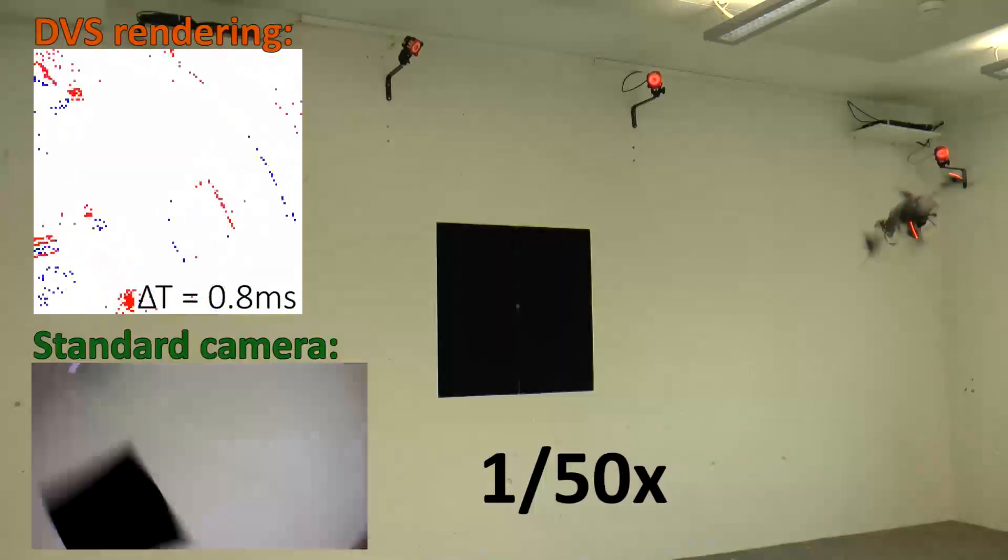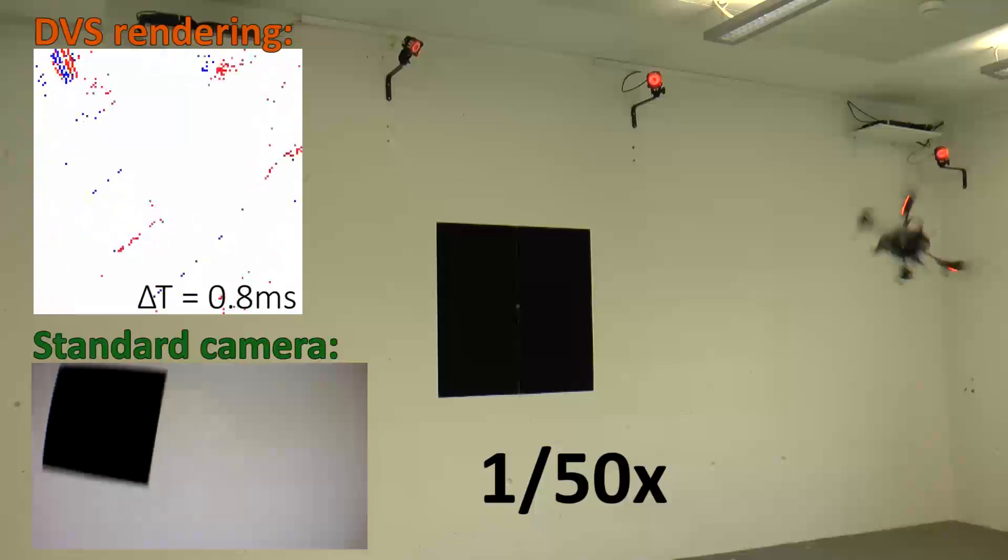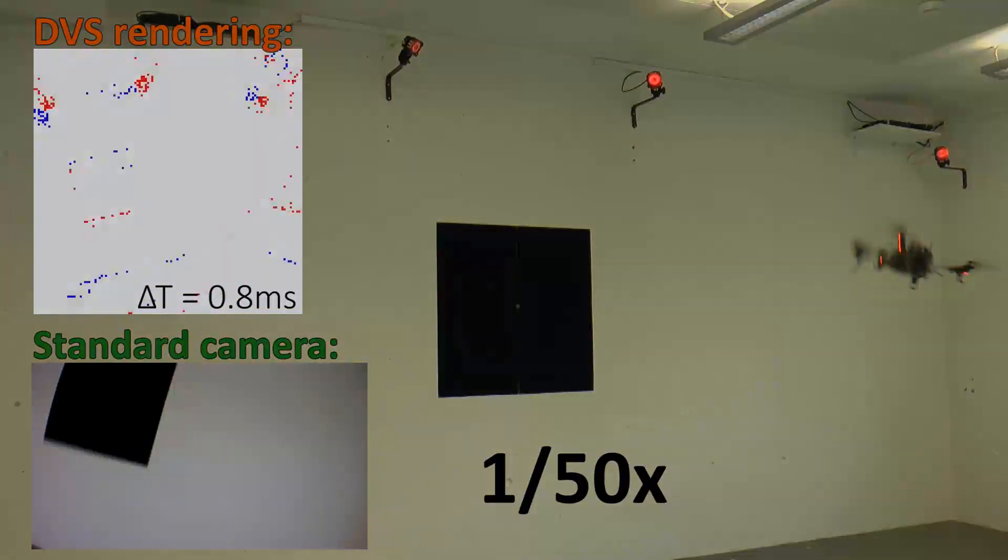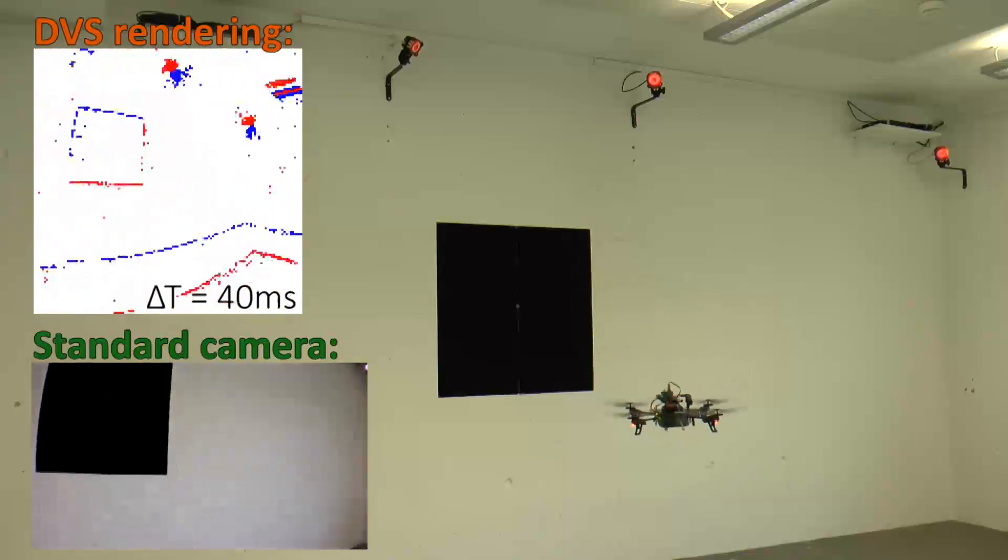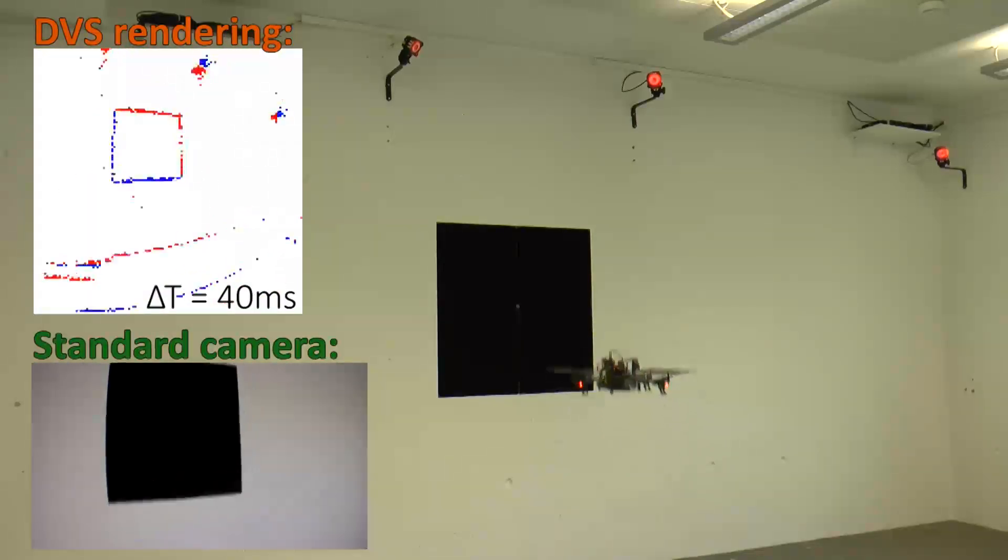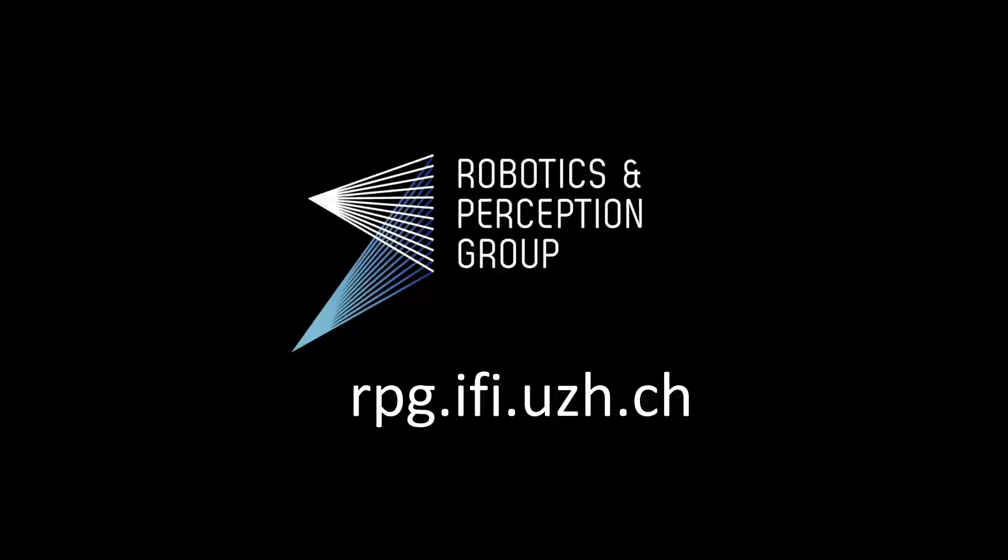The high temporal resolution of the DVS allows us to track the quadrocopter during flips with rotational speeds of up to 1,200 degrees per second. We believe that a DVS is the most promising onboard sensor for enabling highly aggressive maneuvers with flying robots.